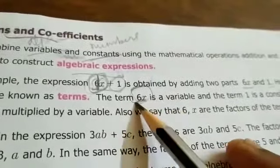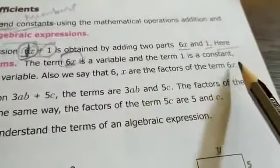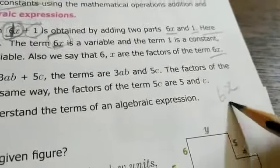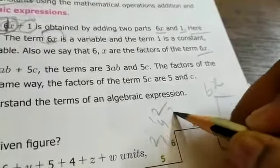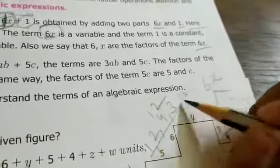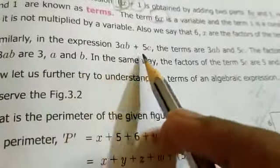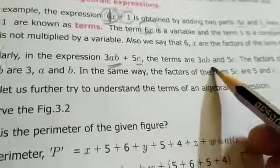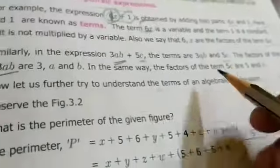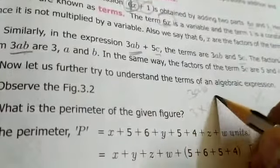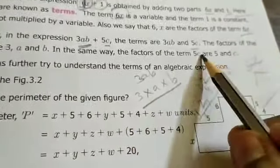Since it is not multiplied by any variable, we say that 6 and x are the factors of term 6x. So 6x is 6 into x, that means these are factors. Similarly in the expression 3ab plus 5c, the terms are 3ab and 5c. The factors of the term 3ab are 3, a, and b. The factors of term 5c are 5 and c.